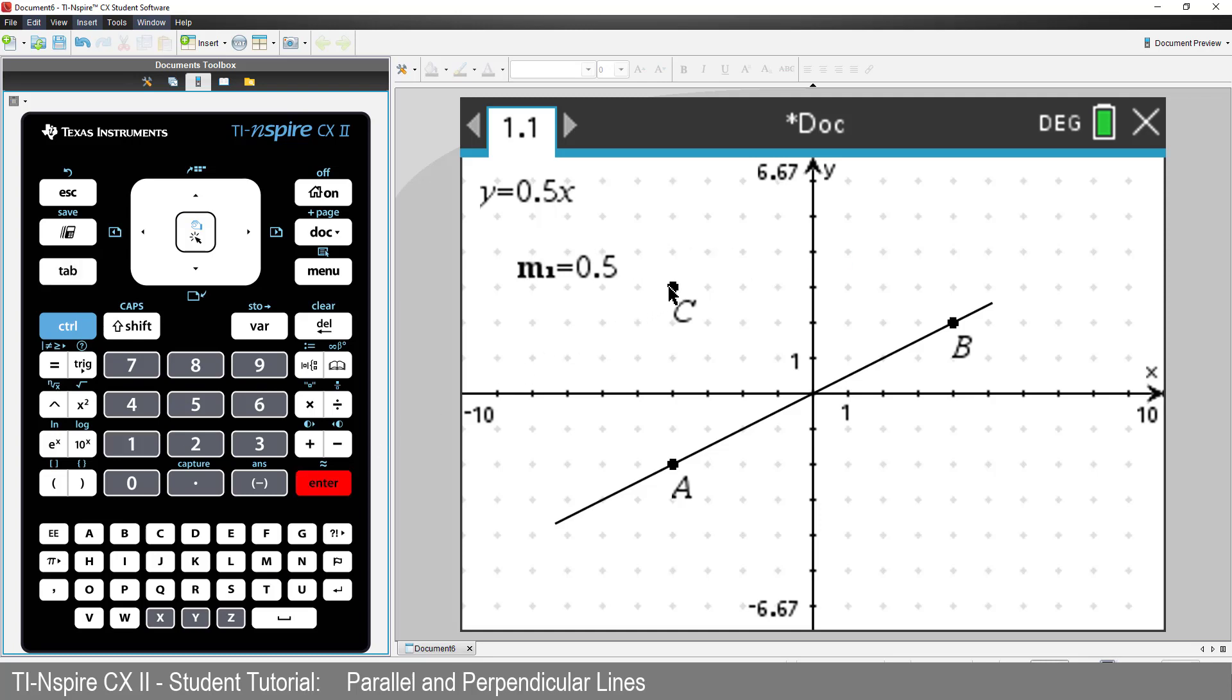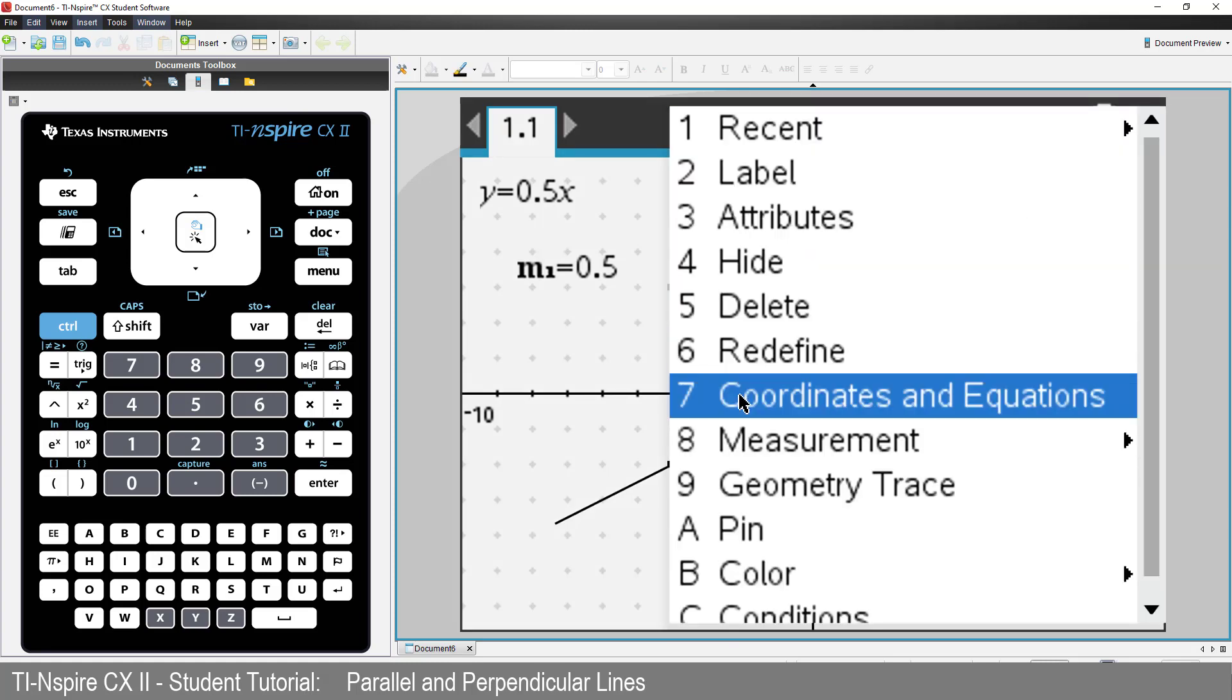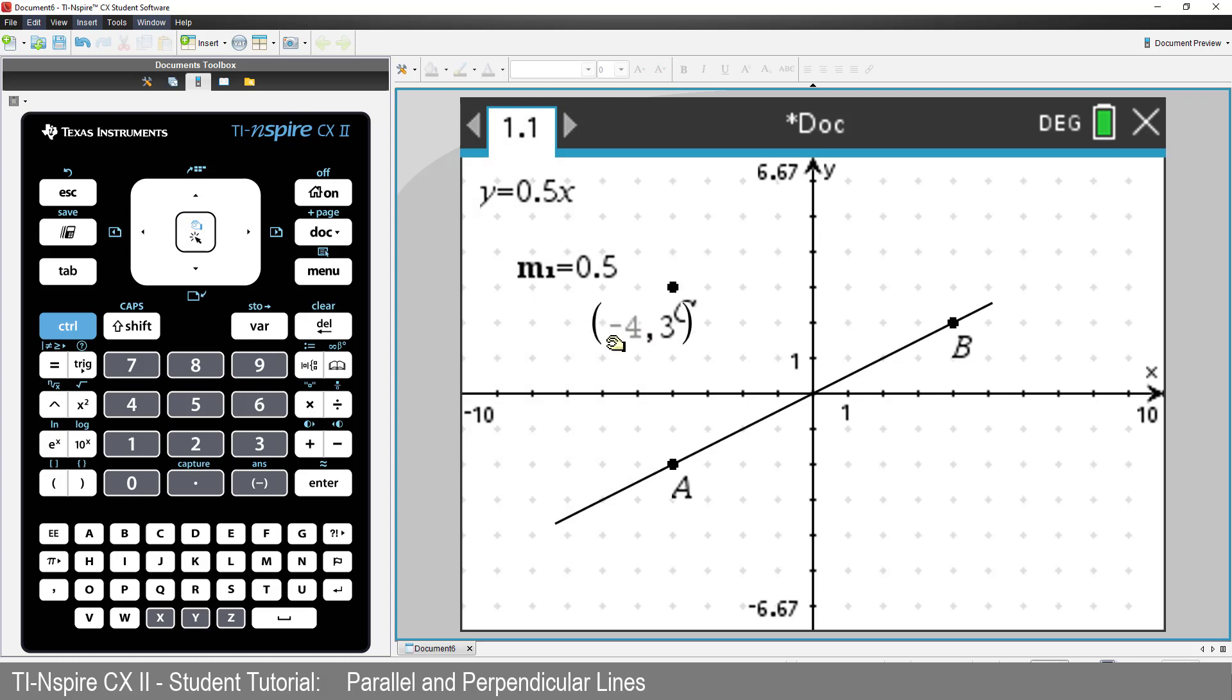Now hover the mouse over the point. Press Control followed by Menu and get the coordinates of the point. And just like the slope measurement, we'll store the coordinates as X1, Y1.